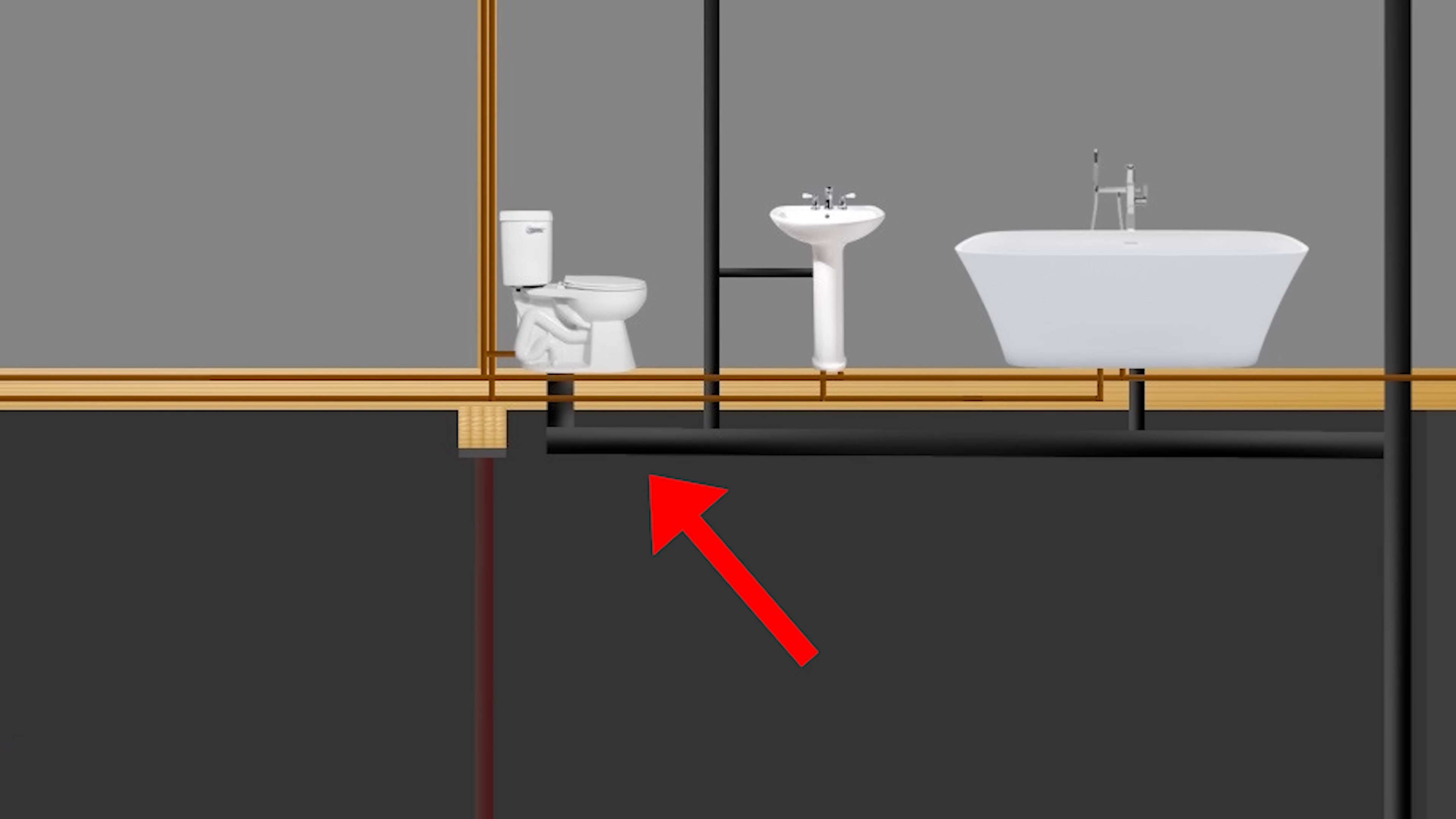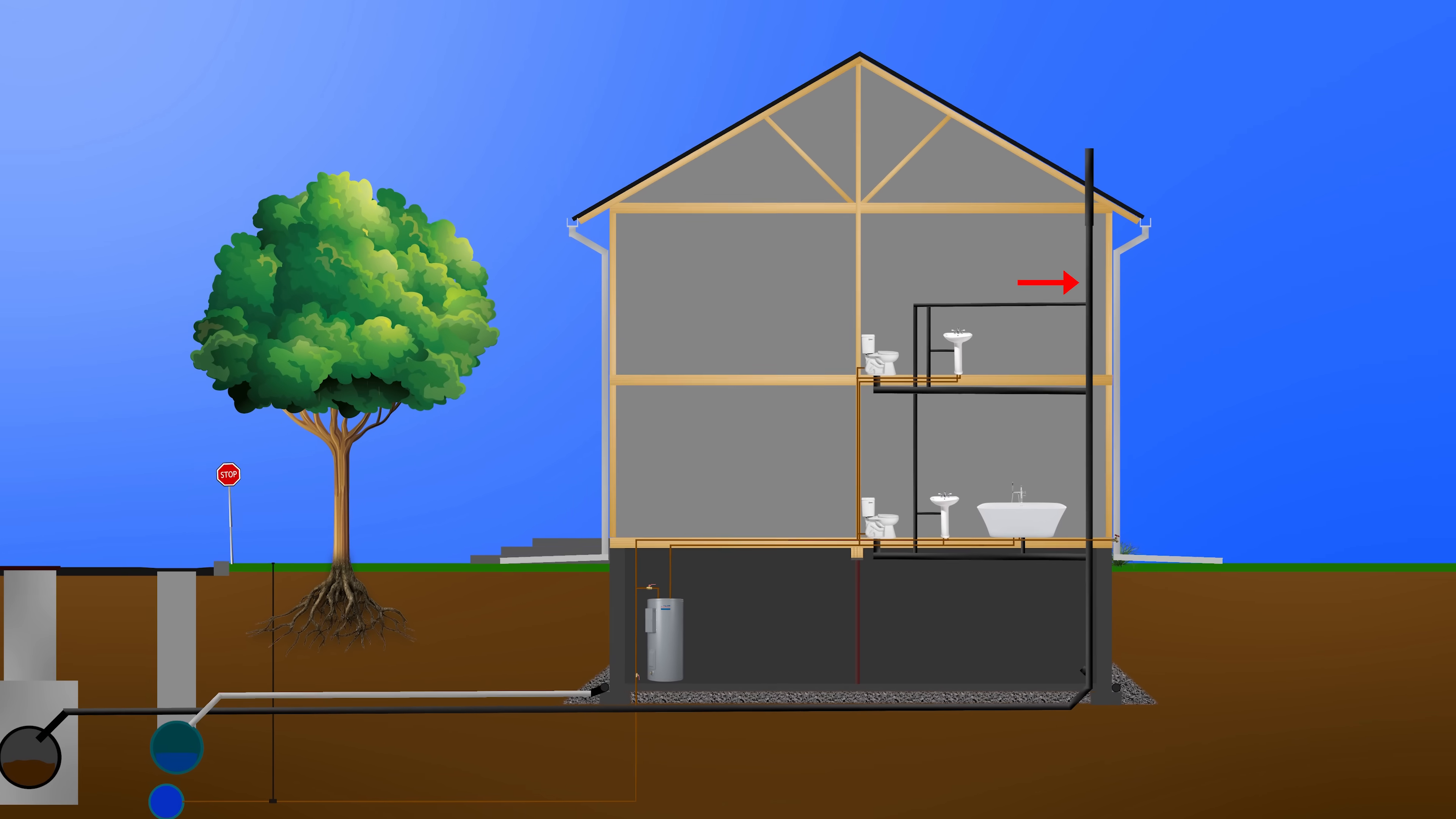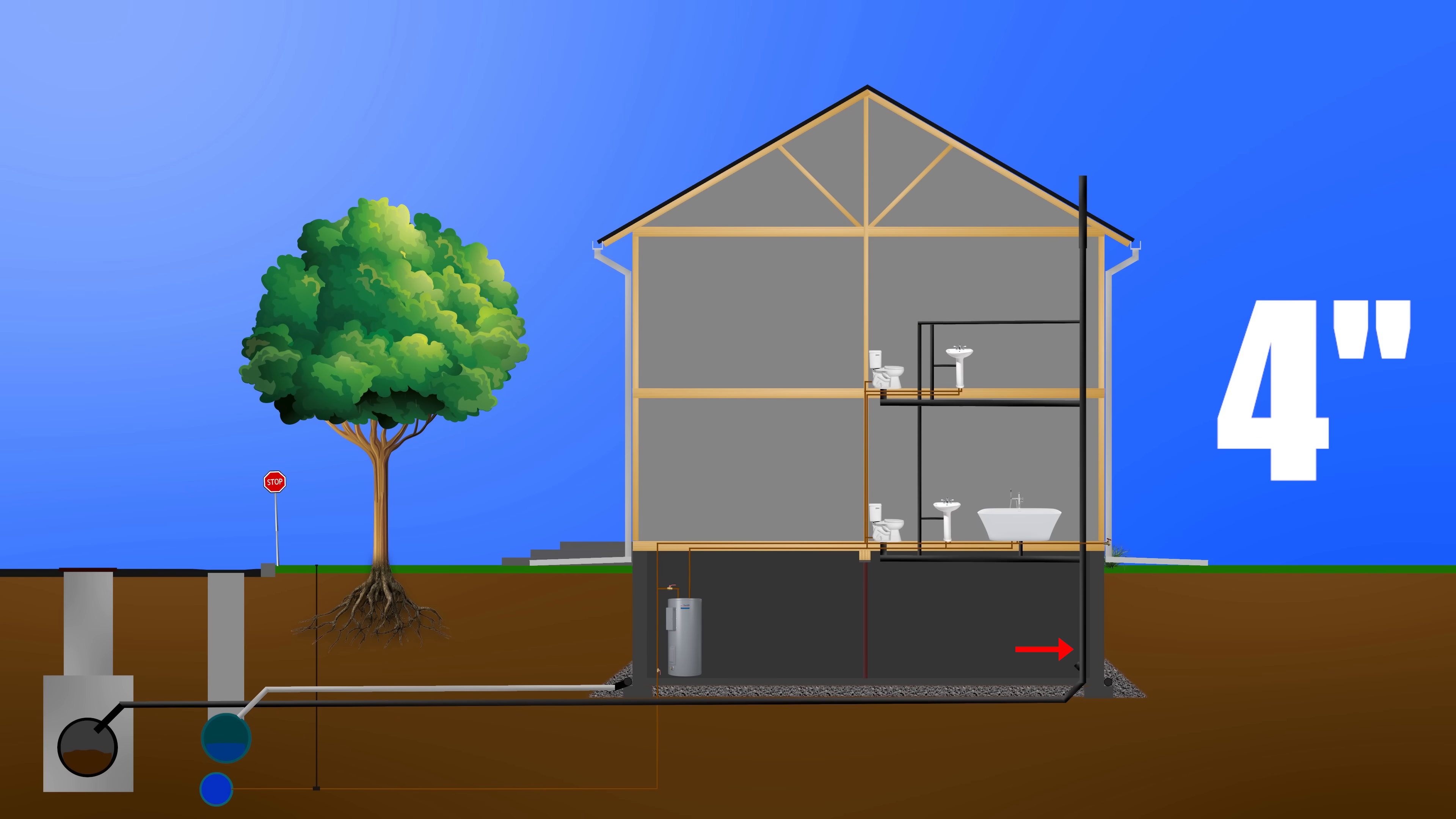As for pipe sizes, most toilet drains are three inches, kitchen and bathroom sinks are inch and a half or two inch if it's wet vented, and showers and bathtubs are two inches by code. The main stacks are either three inches or four inches depending on what the code asks for in your municipality.